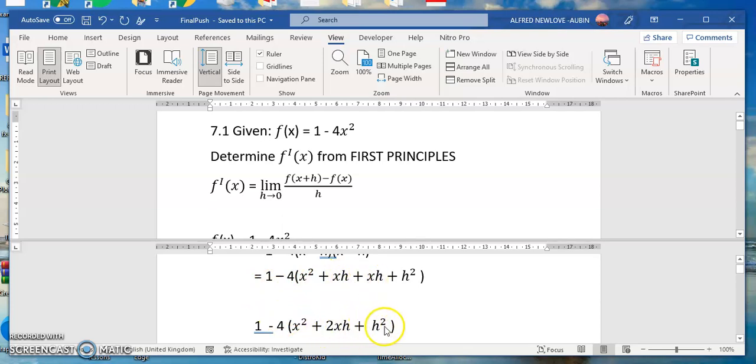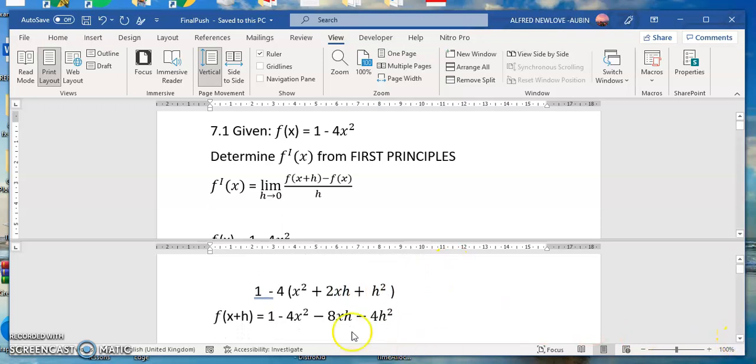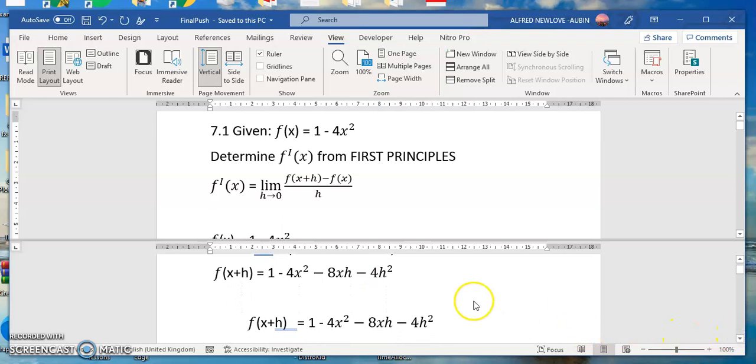Then when you simplify, this will multiply that, that will multiply that, and that will also multiply that. And simplifying, we are going to have this one. So in place of f(x+h), we are going to substitute that there.